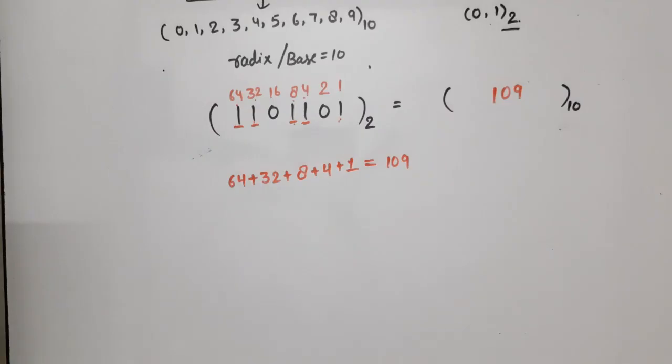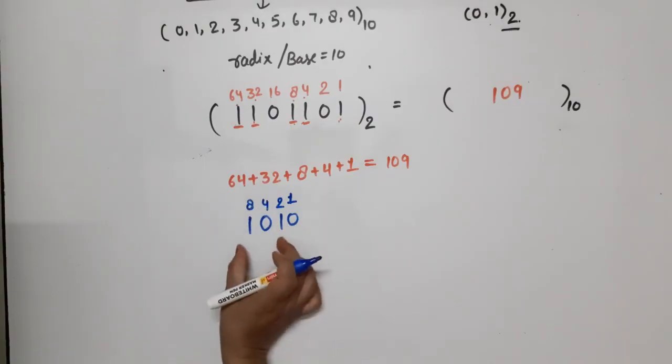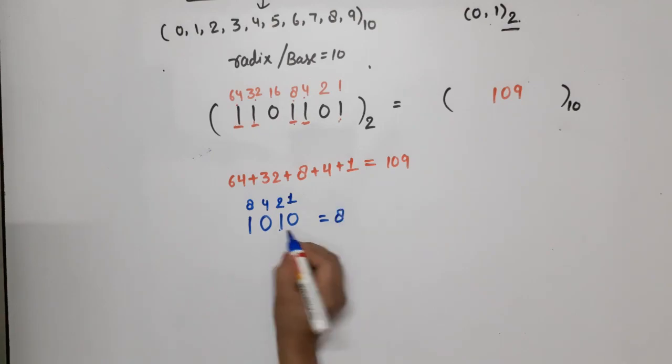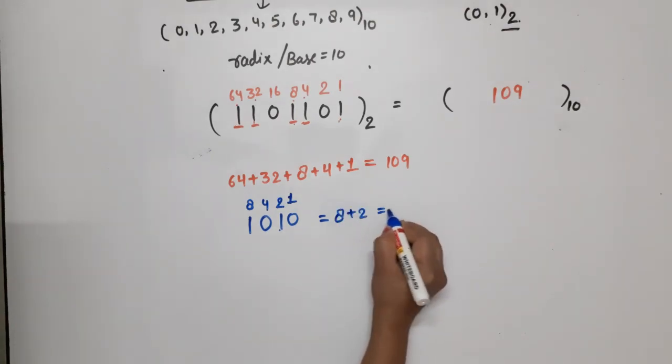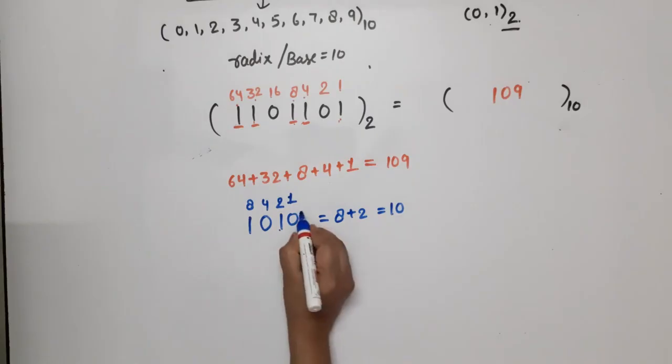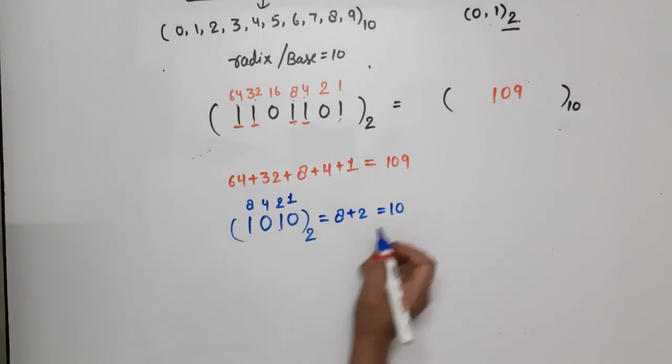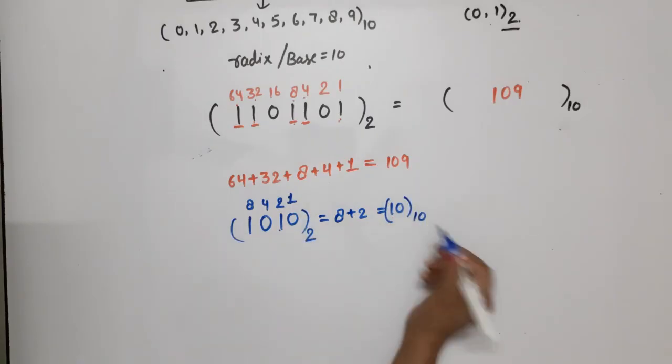Let me take a smaller example. Look at these numbers - what are the weights? This position is 1, this position is 2, this weight is 4, and this weight is 8. Now where 1 is available: 8 corresponding to 8, 2 corresponding to 2. What is the sum value? 10. This means if this value 1010 is in binary, the equivalent decimal is 10.